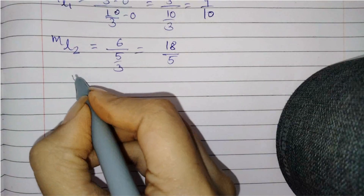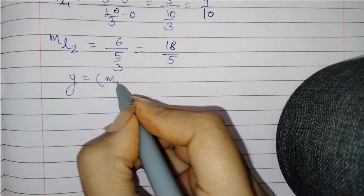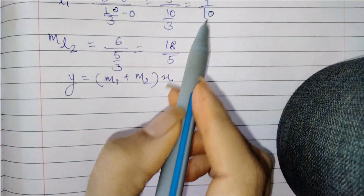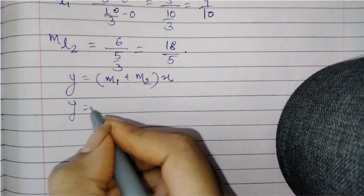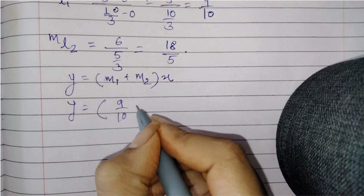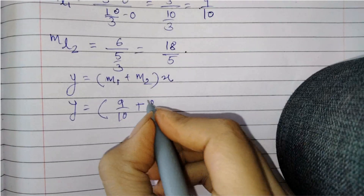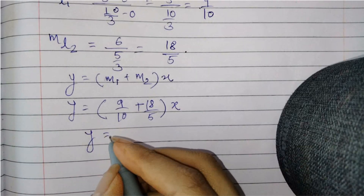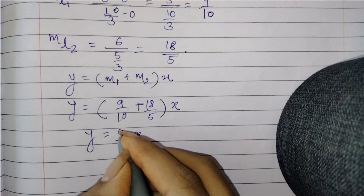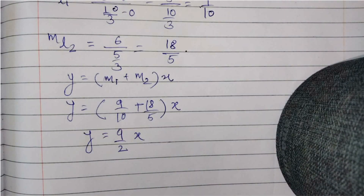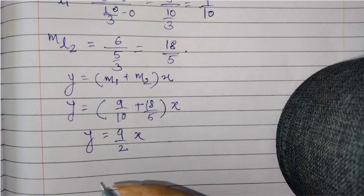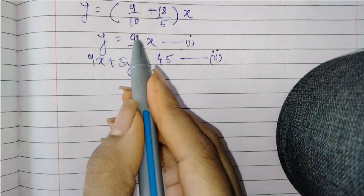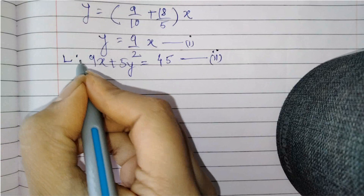Now we have the line y equals (M1 plus M2)x with which we need to find the point of intersection. Substituting M1 equals 9/10 and M2 equals 18/5: y equals (9/10 + 18/5)x, which simplifies to y equals (9/2)x.